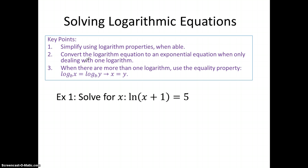Two things are going to happen. You're either going to have one logarithm at the end, in which case you want to convert the logarithm into an exponential equation, or you're going to have more than one logarithm — really two — after you've used the logarithm properties to simplify. If you have two, you're going to use the equality property: if two logarithms are equal with the same base, set the arguments equal to one another. This is similar to solving exponential equations where you have the same bases.